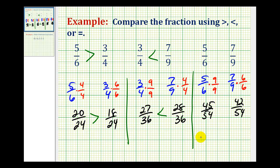So now it's much easier to recognize that 45/54ths is greater than 42/54ths, therefore 5/6 is greater than 7/9.